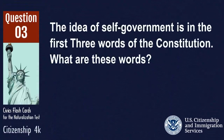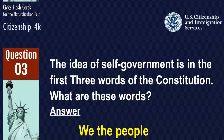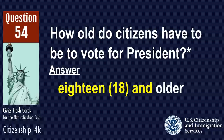The idea of self-government is the first three words of the Constitution. What are these words? We the People. How old do citizens have to be to vote for president? 18 and older.